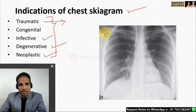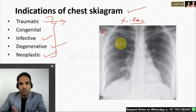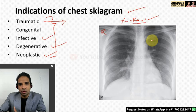Usually R is written on the skygram. Most of the time we use the word X-ray, but this film is actually called a skygram or radiograph. These are the two correct terms you should use while describing the skygram in an exam. X-rays are the rays used to produce this film, but the film itself is called a skygram or radiograph.